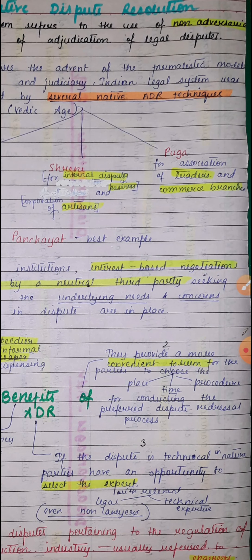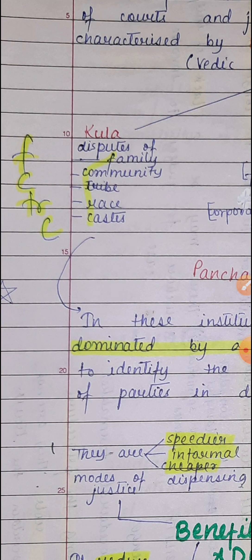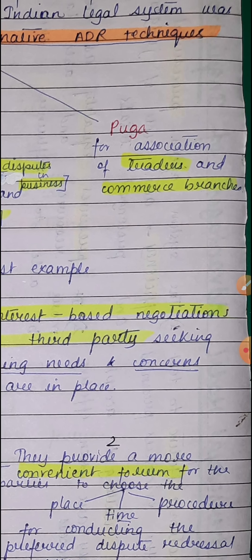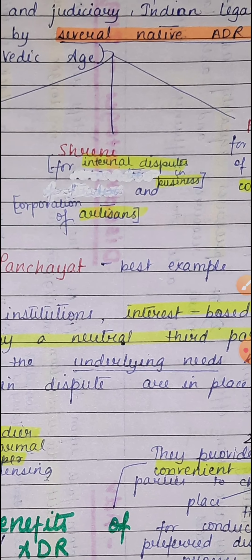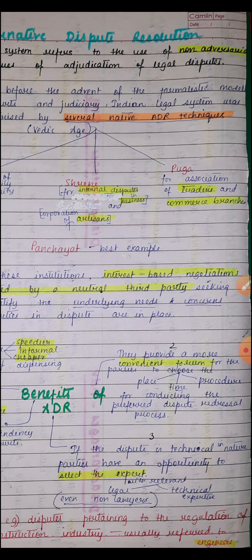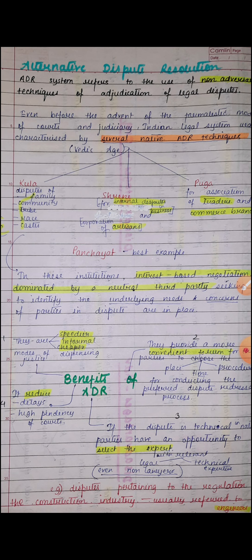ADR is a lot less formal. Even before the advent of formal court culture, India had several ADR mechanisms right from the Vedic age. We had Kula, Shreni, and Puga. Kula is for settling disputes of family, community, tribe, race, and caste (FC-TRC). Shreni is for internal disputes in business and for corporations of artisans. Puga is for associations of traders and commerce branches. Panchayat is the best example of present-day ADR prevalent in Indian villages. In these institutions, interest-based negotiations are dominated by a neutral third party seeking to identify the needs and concerns of both parties.